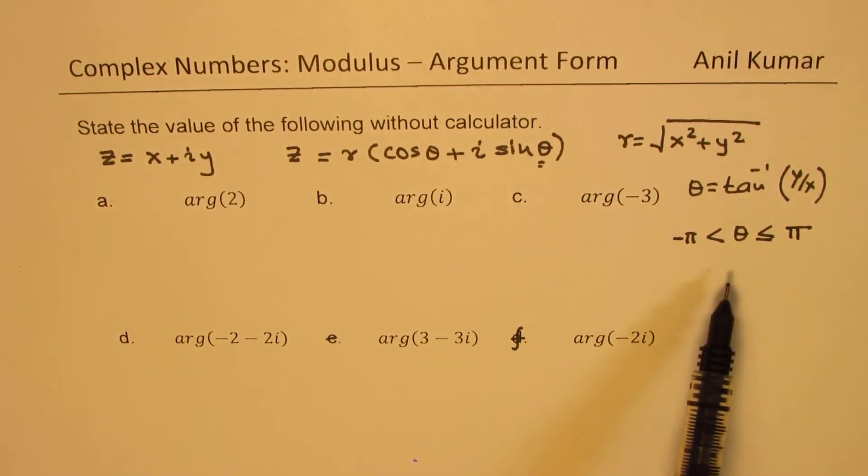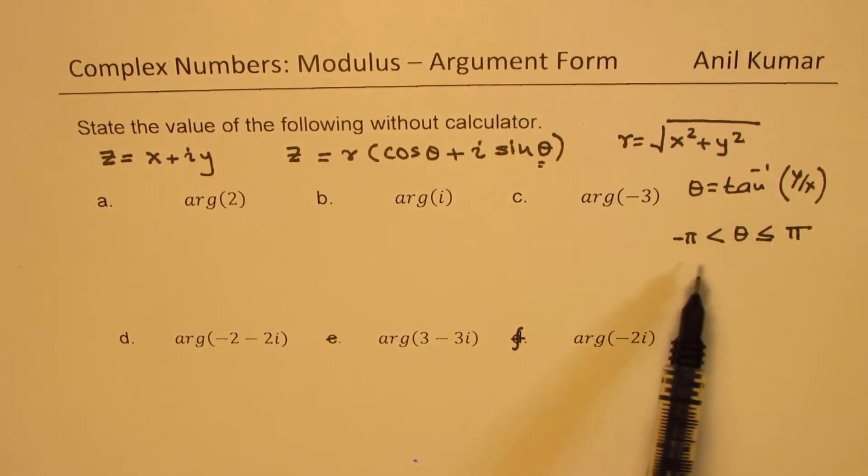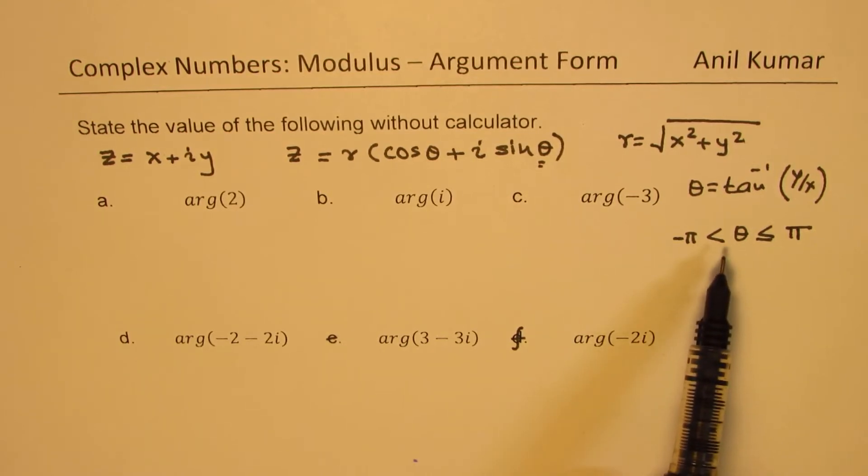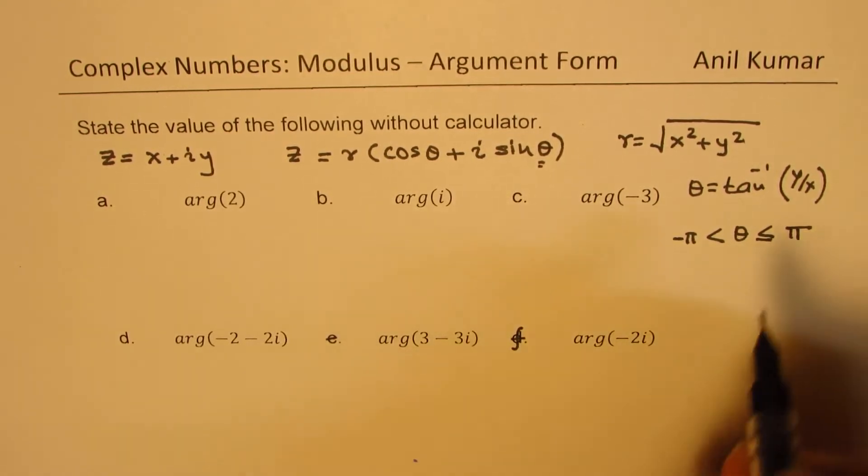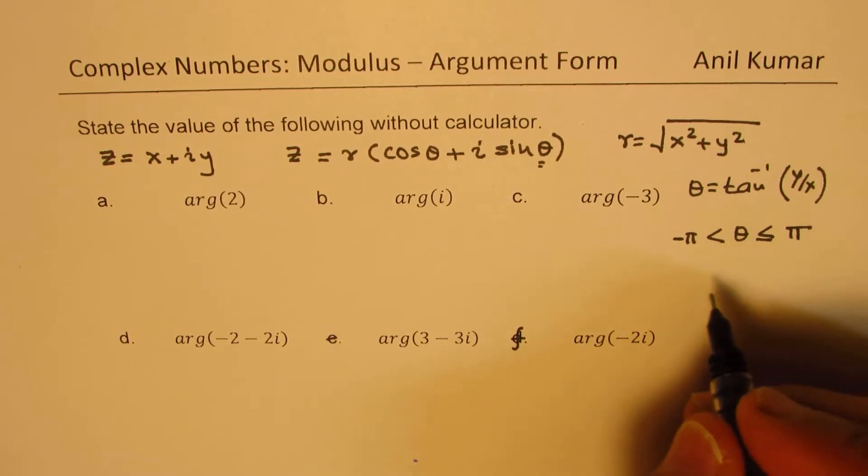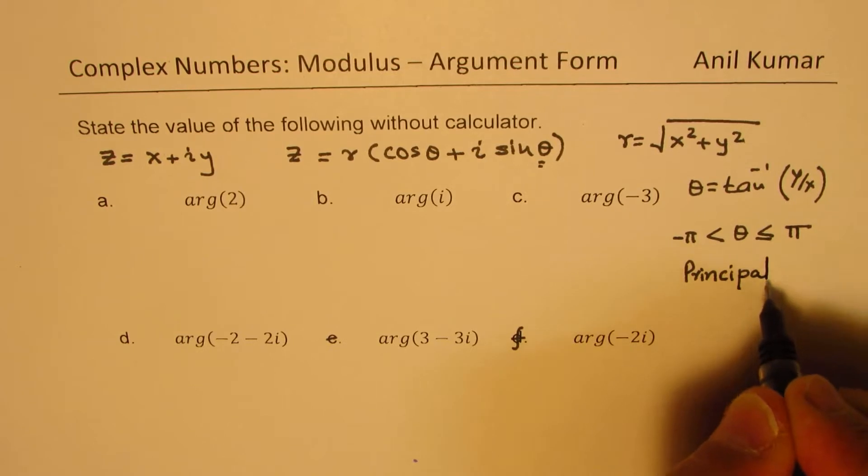Mainly because we want to be unique about our solution. If we go one full circle twice or three times, we can land up at the same point. So that basically gives you the principle argument. So we are actually interested in finding the principle argument.